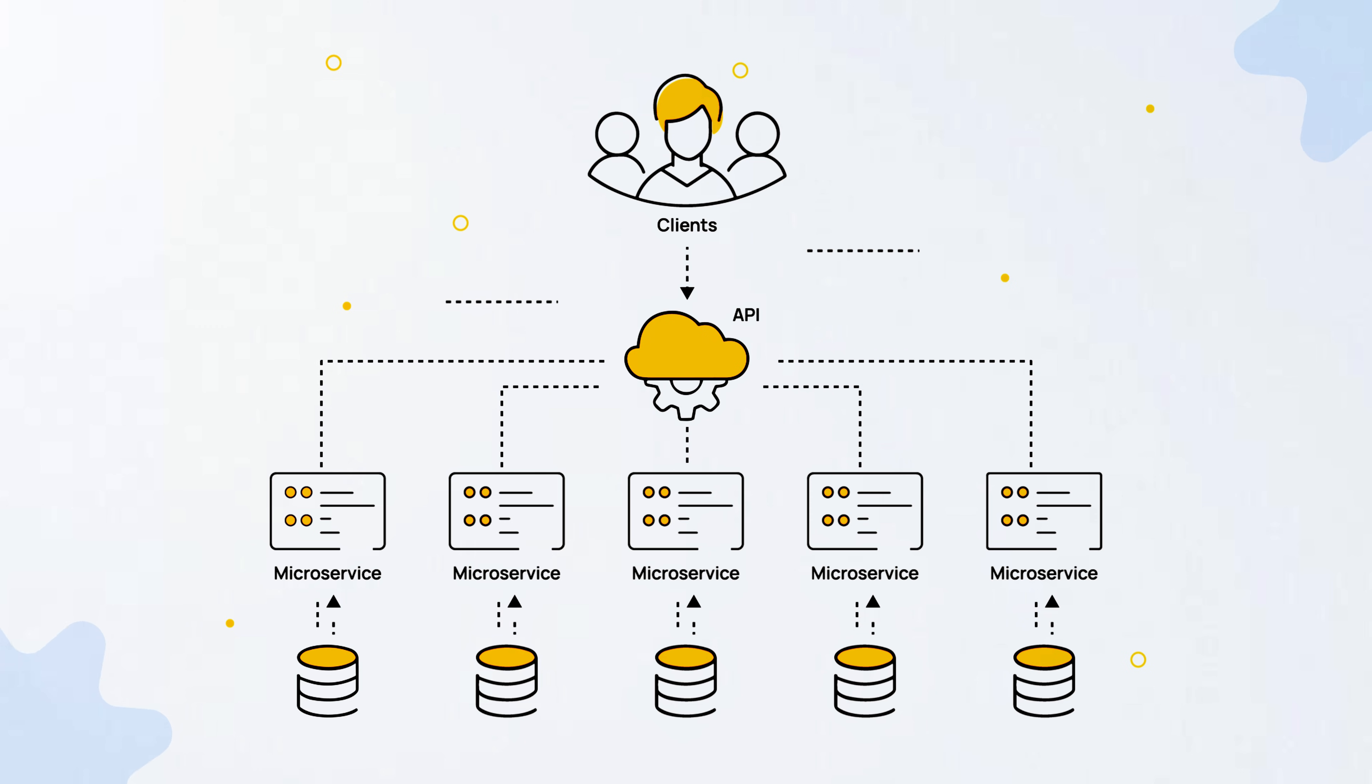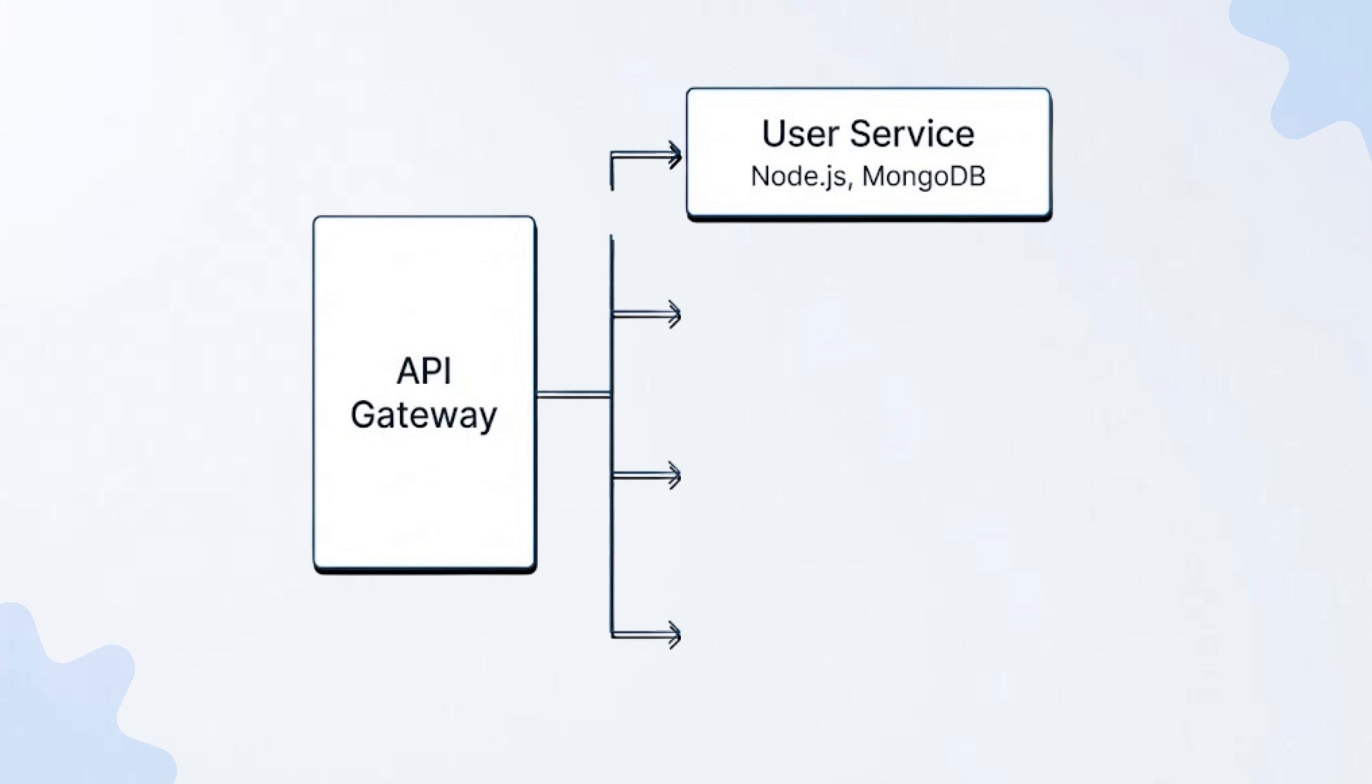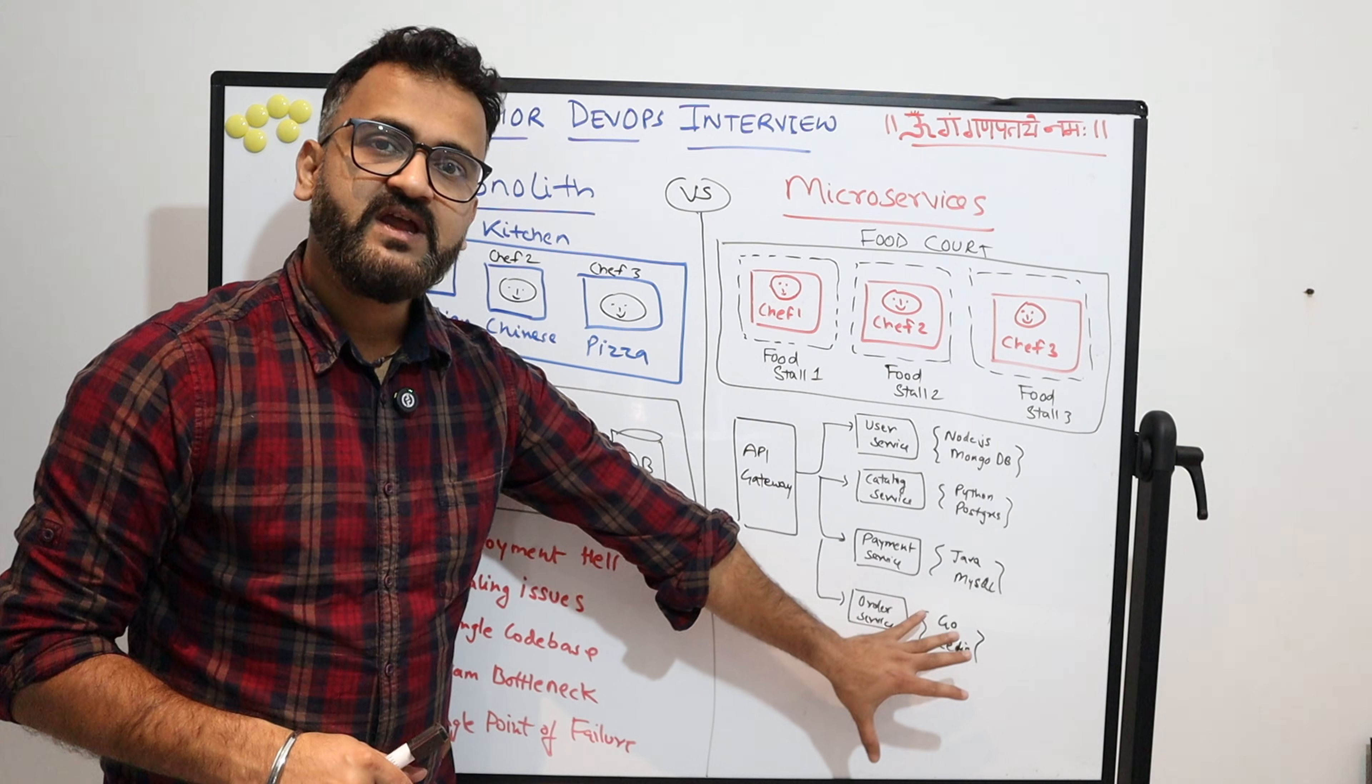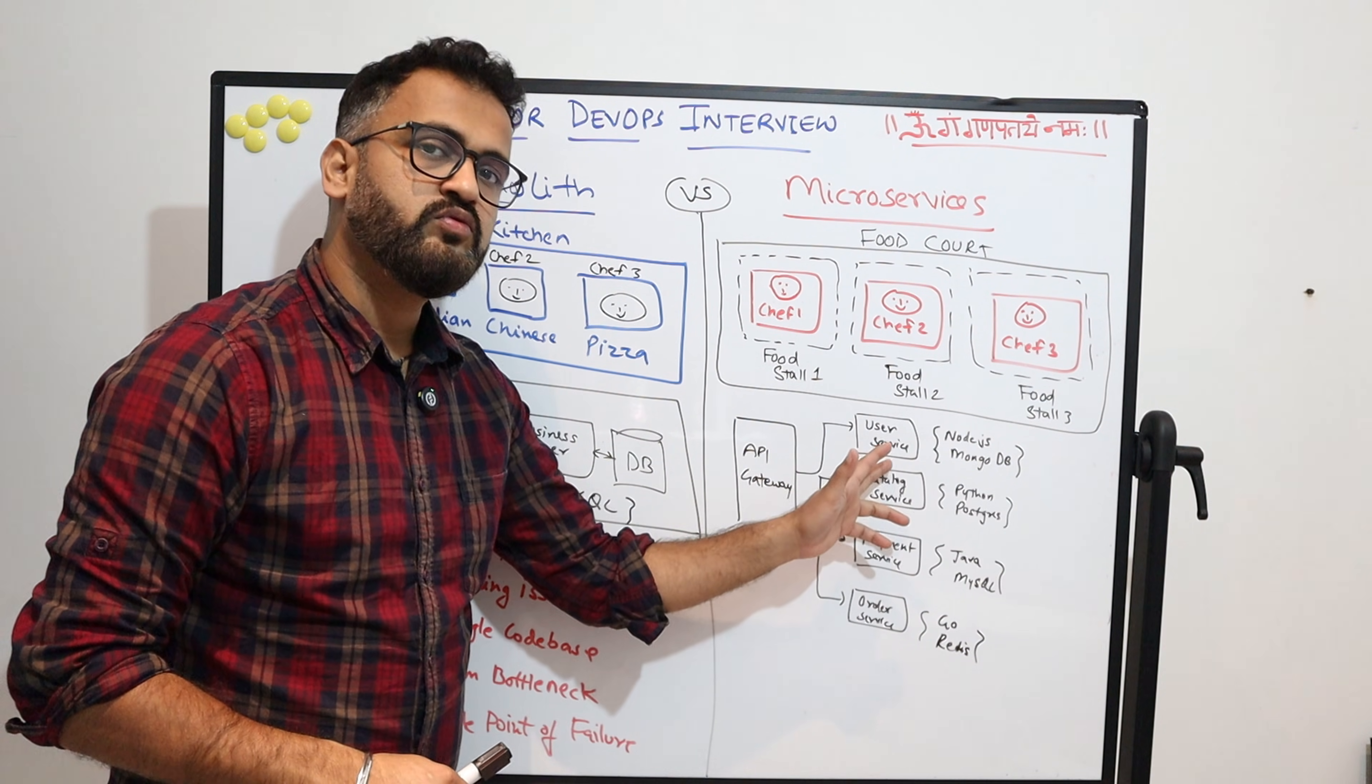For example, for an application like e-commerce, you will have your user service working on Node.js and MongoDB, catalog services using Python or Postgres, payment service Java MySQL, or your order service could use Go or Redis. All are working independently.